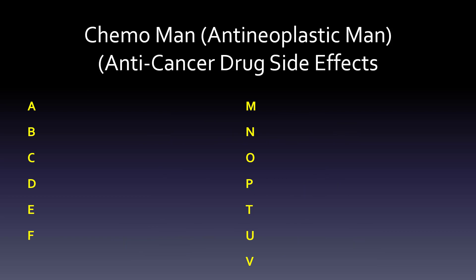The first thing is that we're just going to use these letters: A, B, C, D, E, F, then M, N, O, P, then T, U, V. But we're not going to use the vowels. So we're only going to use A, B, C, D, F, M, N, O, N, P, T, and V.